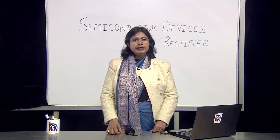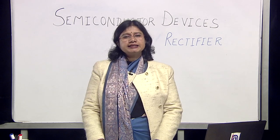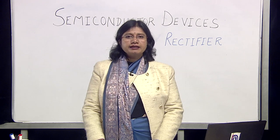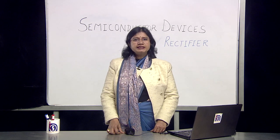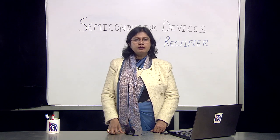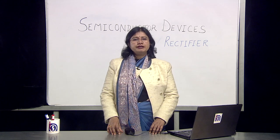A p-n junction diode is the simplest possible rectifier — a simple junction diode is capable of converting an AC signal into a DC signal. A single p-n junction diode can act like a half wave rectifier, or else we can use a combination of two p-n junction diodes and use it as a full wave rectifier. Thus there are two kinds of rectifications possible with the p-n junction diode: half wave rectification and full wave rectification.